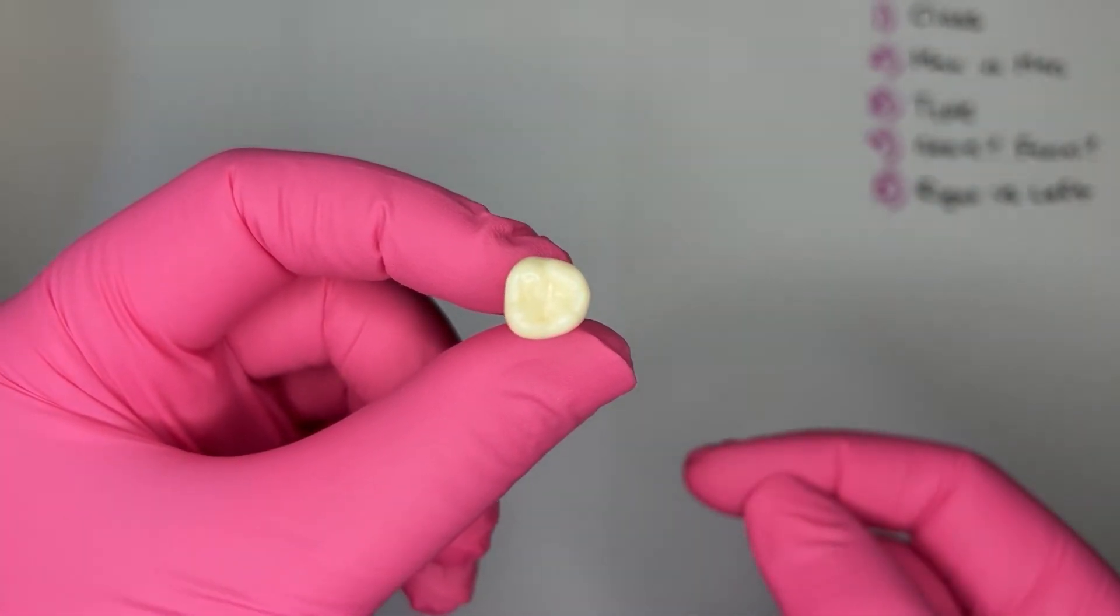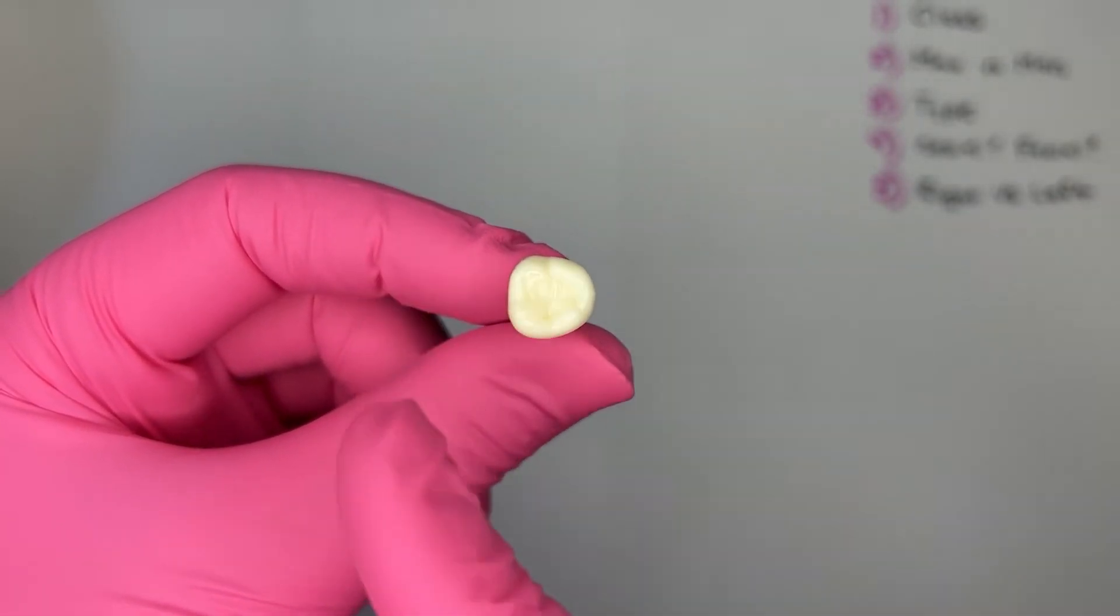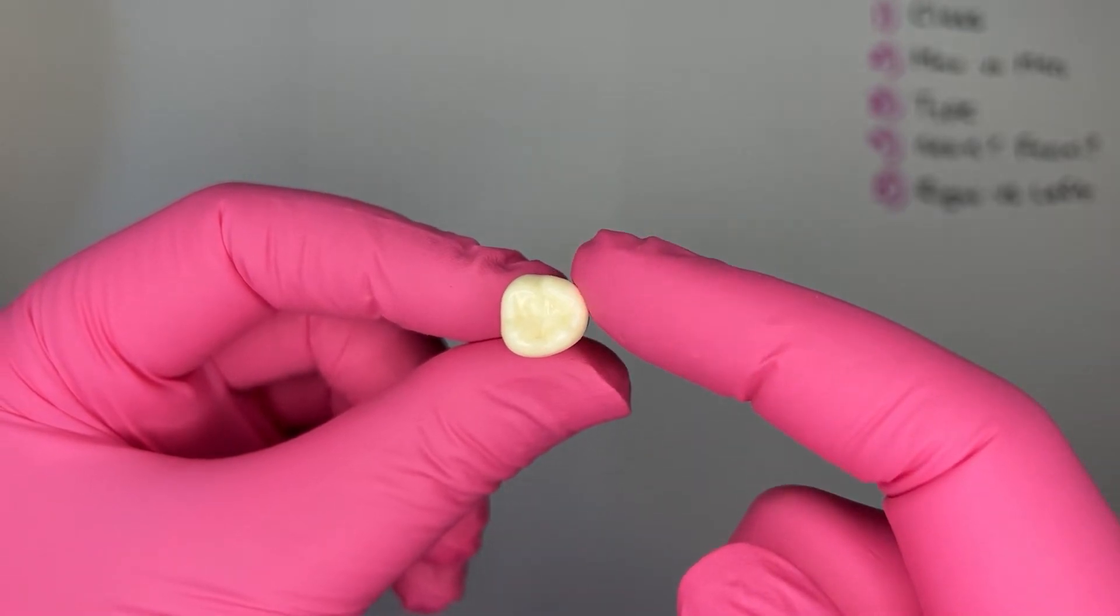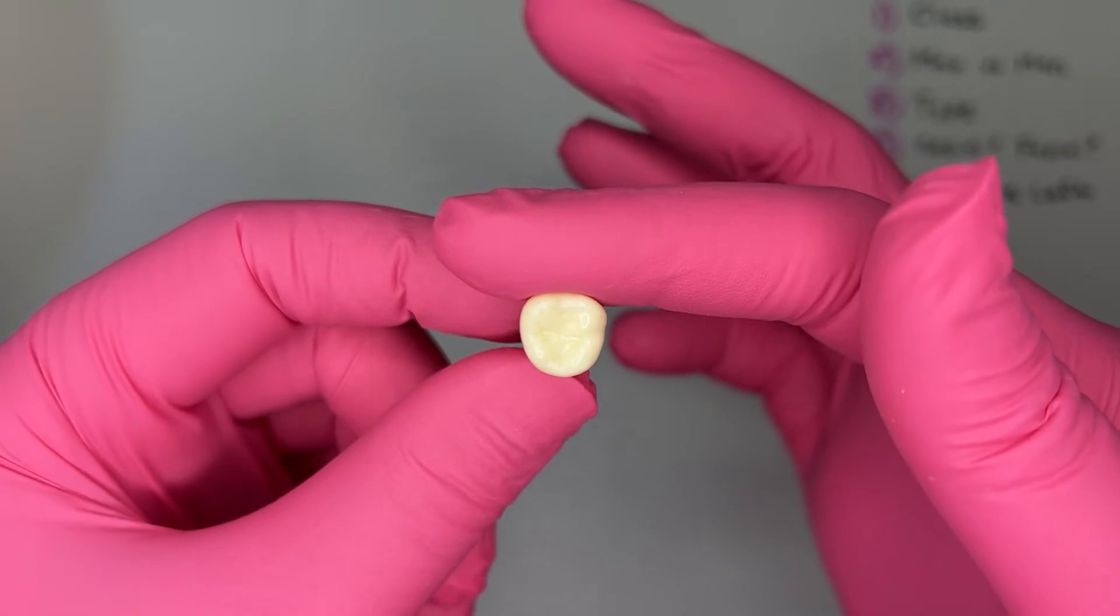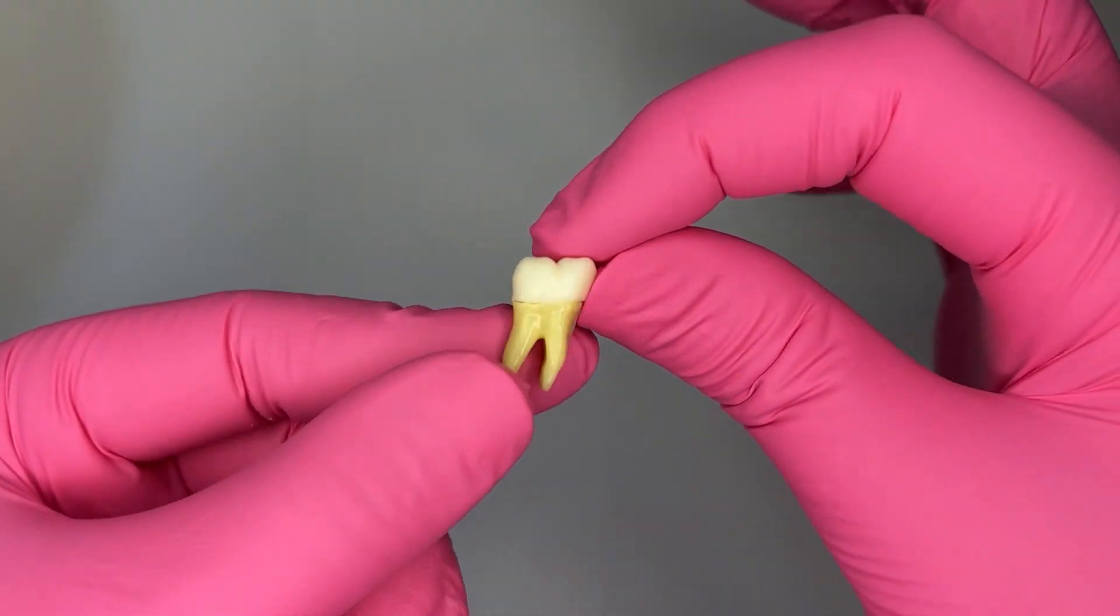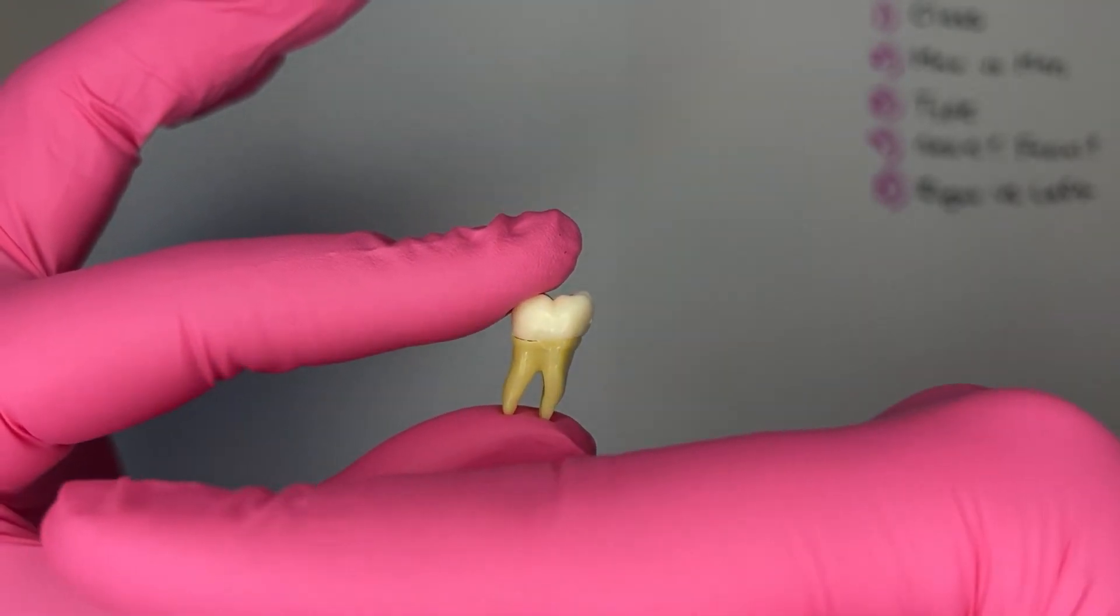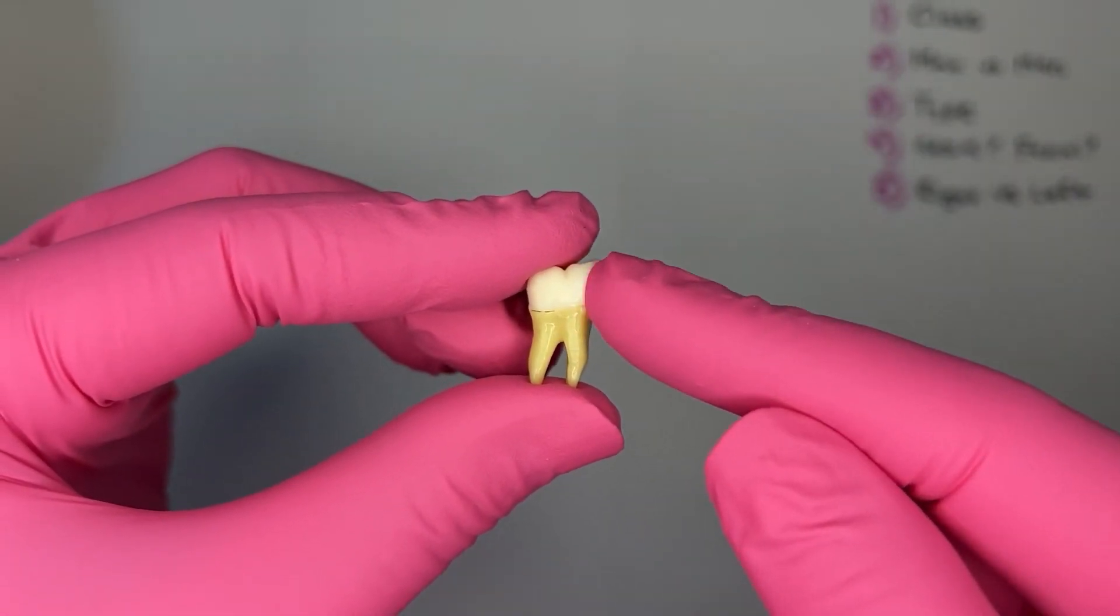Looking at it from the occlusal to determine mesial versus distal, I look at the outline of the occlusal. The outline of this side is straight, while the outline of this side is curved. So I know that this is the mesial. Another way of telling is looking at the roots. The roots are tilted towards the distal. So this side is the mesial.